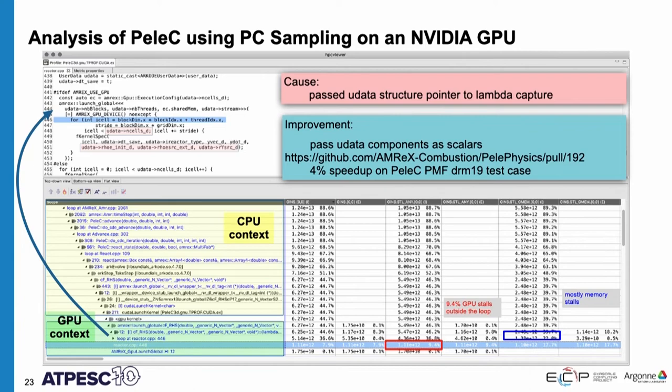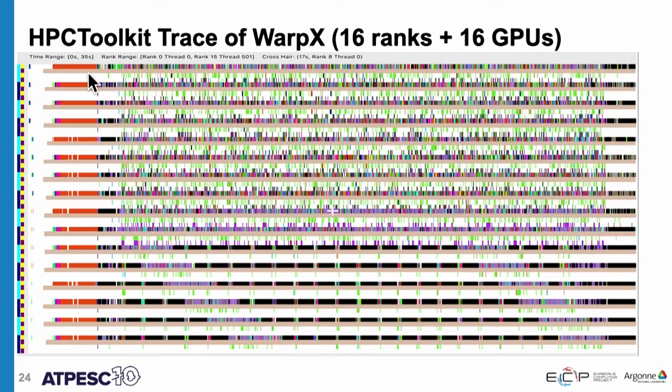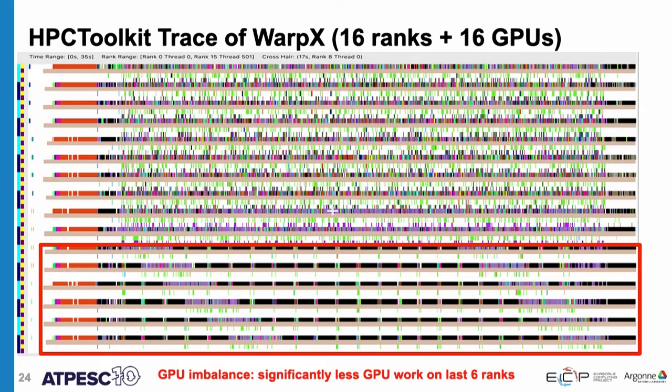This is a trace of WarpX, which does both CPU and GPU-accelerated computation. The flecks correspond to executions of GPU kernels, while solid lines represent MPI ranks or helper threads. Looking closely, there's a lot fewer flecks on the bottom MPI ranks, indicating load imbalance in the GPU computation — the top few ranks are performing much more computation on the GPU than the bottom ranks.